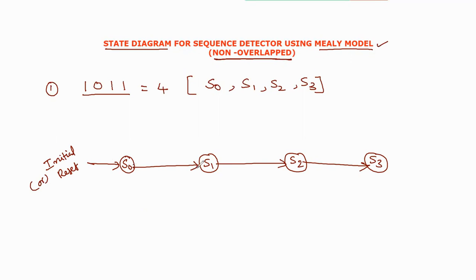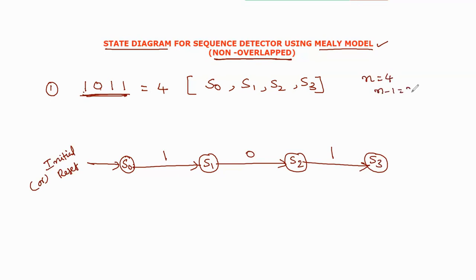Now we will show the next state transitions. There are two bits: 0 and 1. In the Mealy model, the next bits will be detected in the new states. The bits will be placed only in n-1 bits. The total number of bits is n, so n-4 equals n-1. That will be placed in 3 bits, and the remaining last bit is placed separately.